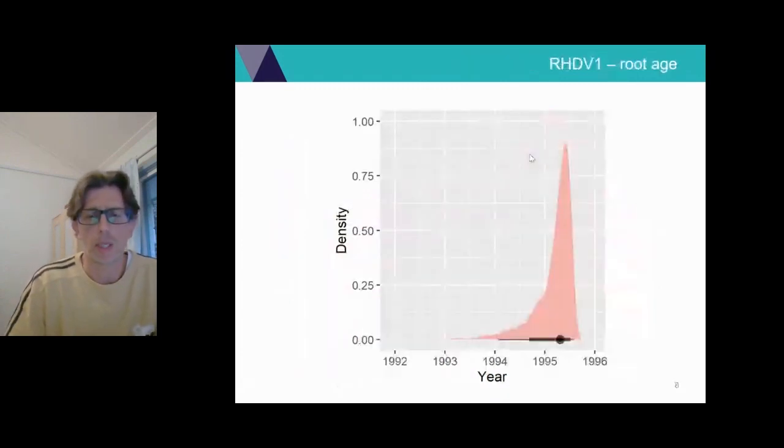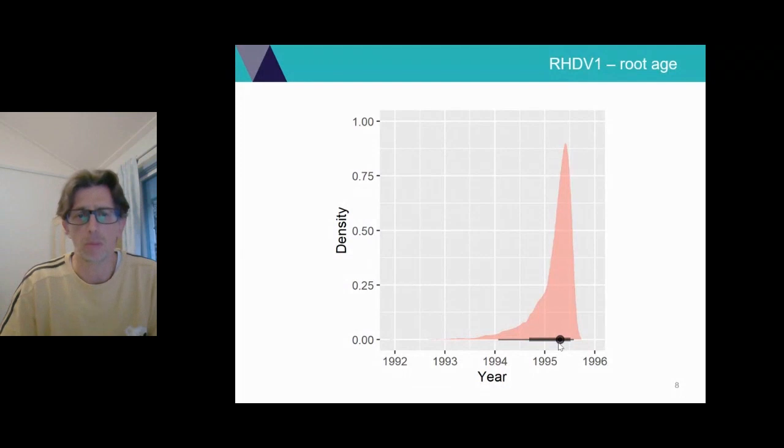Similarly, we can look at the date of release of RHDV1. We know the answer in this case, but it is interesting to look at this just to confirm whether we are accurate. And the analysis estimates the arrival of the release of RHDV1 in Australia in early 1990, while we know the virus escaped, I think it was October 1995. So despite the fact that we are trying to estimate an event that happened almost 30 years ago, we are getting wrong at the most by six months, which is pretty cool.